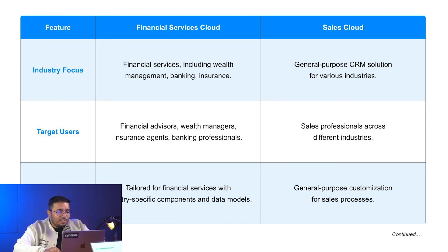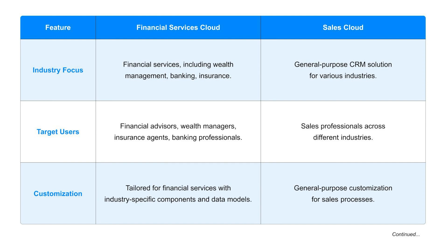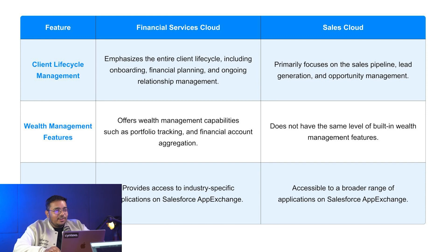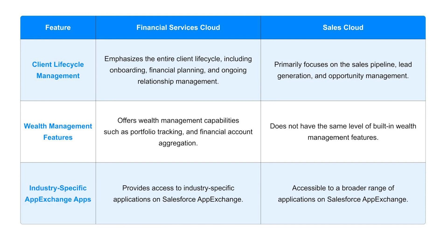For client lifecycle management, Sales Cloud primarily focuses on sales pipeline, lead generation, and opportunity management, whereas Financial Services Cloud focuses on client onboarding, financial planning, and ongoing relationship management. Then there are wealth management features which are specific to Financial Services Cloud — Sales Cloud does not offer them out of the box, but you can build them. There are also industry-specific AppExchange applications available only for Financial Services Cloud, while Sales Cloud has its own general-purpose applications.